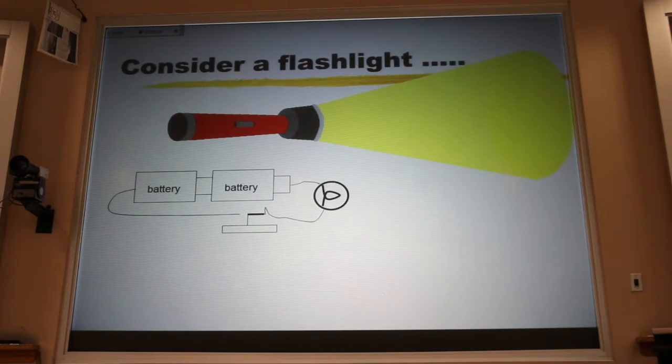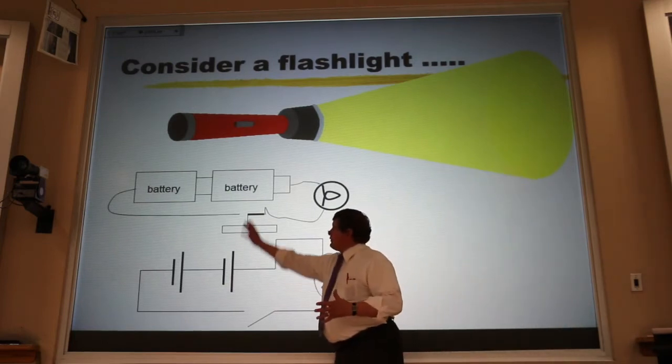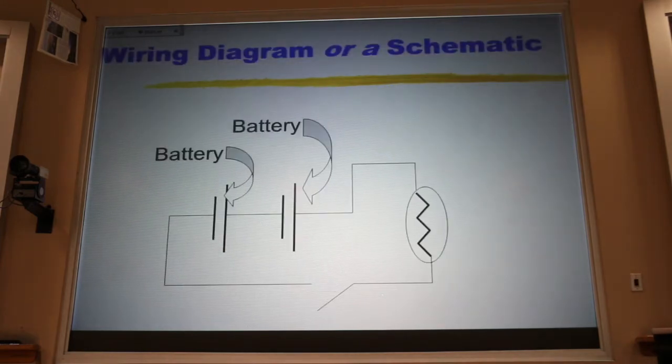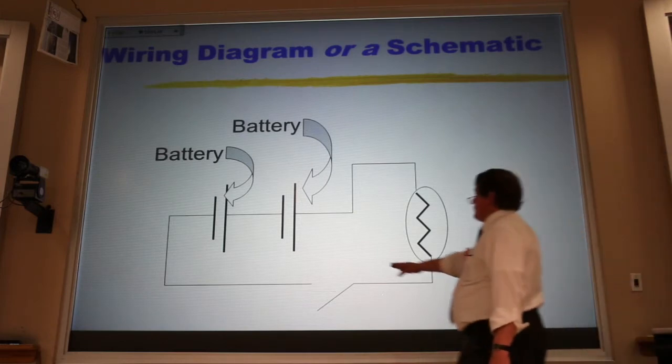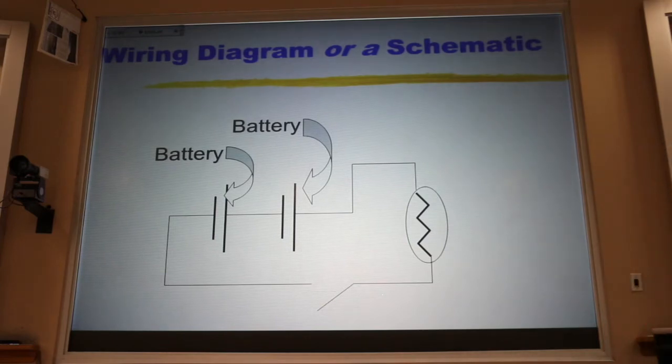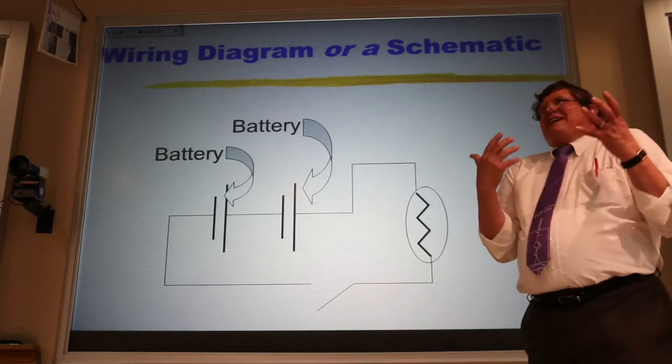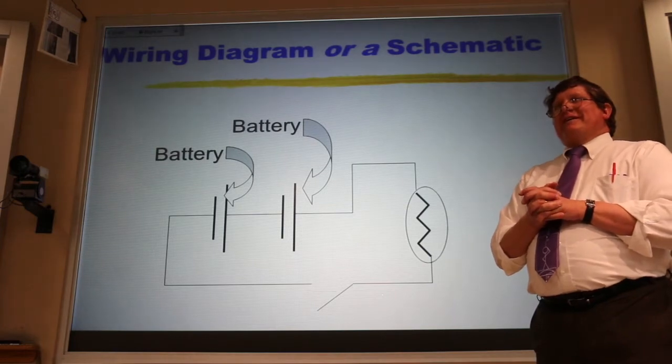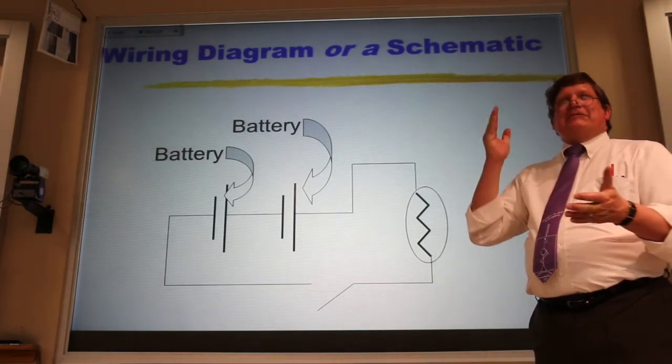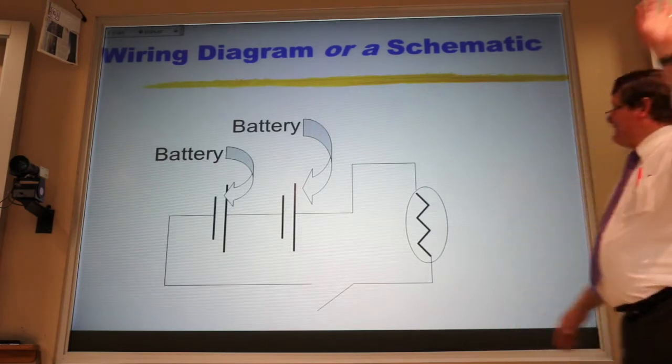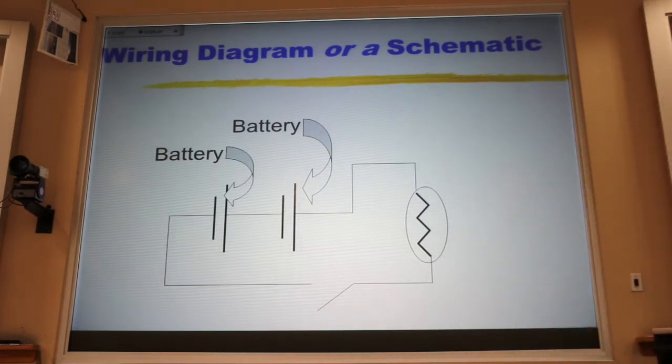We don't typically draw a flashlight that way. We draw a schematic diagram where we use symbols to represent the pieces. In that schematic, the battery symbol you've seen before. The longer line is the positive terminal of the battery. I shouldn't tell you that the bumpy end of a battery is the positive end, but the last three years on my exams I've had to make that announcement. The bumpy end of the flashlight is the positive end. You should know that by now. You're grownups.